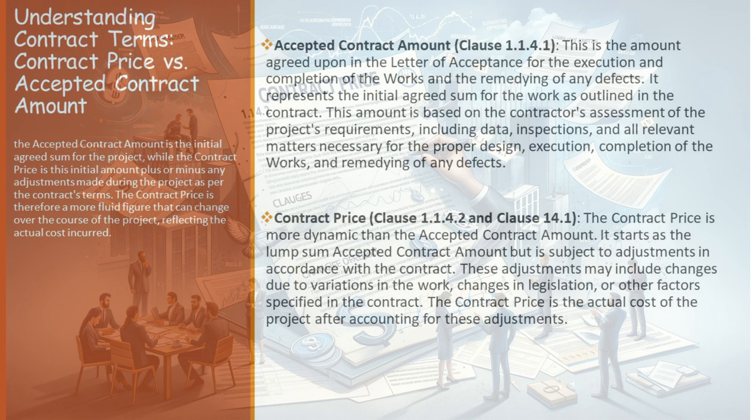This clause ensures that the contractor is not unfairly penalized or benefited by changes in law that occur after the contract has been signed. Another important aspect to consider is the role of the engineer in these adjustments, as outlined in Clause 3.5. The engineer acts as a mediator and a fair judge in cases where there's a need for determination. They consult with each party in an attempt to reach an agreement. If an agreement is not possible, the engineer makes a fair determination in accordance with the contract, taking into account all relevant circumstances.